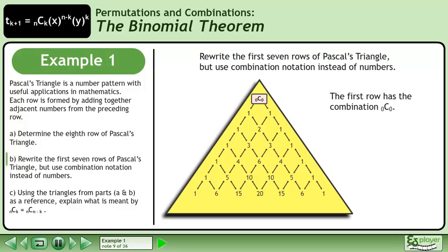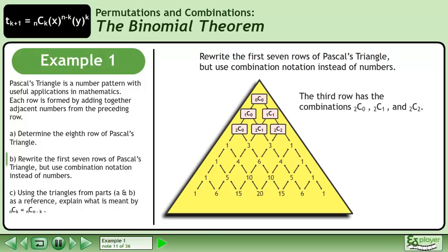The first row has the combination zero choose zero. The second row has the combinations one choose zero and one choose one. The third row has the combinations two choose zero, two choose one, and two choose two.